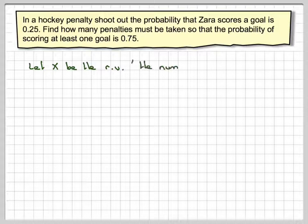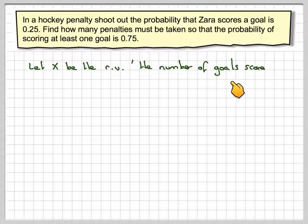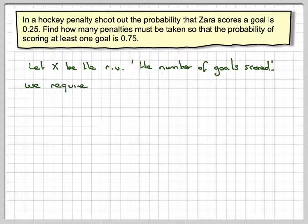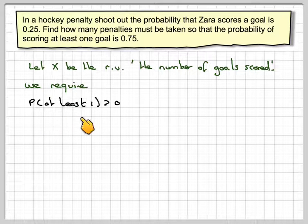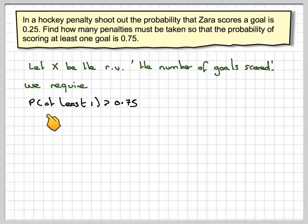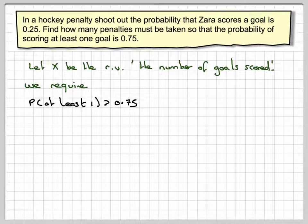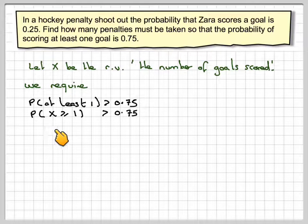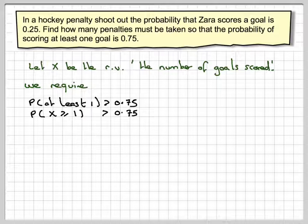So let X be the random variable of the number of goals scored. We require a probability of at least one being greater than 0.75. Now, to find the probability of at least one, you need to do the probability that X is greater than or equal to one is greater than 0.75.